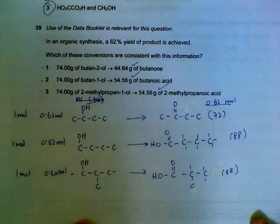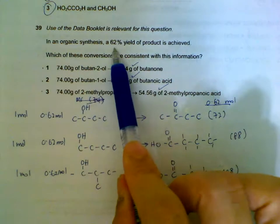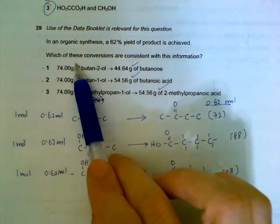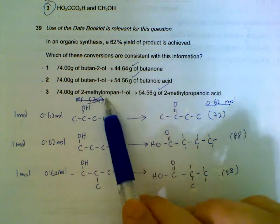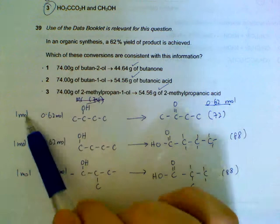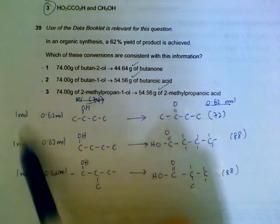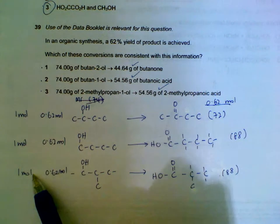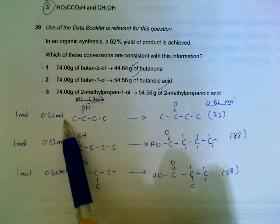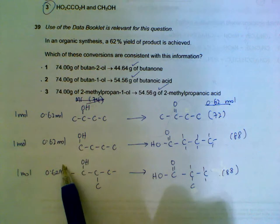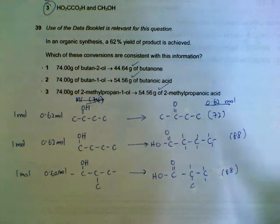Number 39. We have this product's 74 grams. 62% yield is achieved. So what I do is change this 74 grams into number of moles. All of them have MR of 74. So I'll start off with 1 mole each. I'll use the 62% to mean that out of the 1 mole of the reactants, only 0.62 moles of the reactants have successfully converted into products. In other words, we will get 0.62 moles of products on the other side.